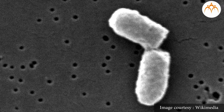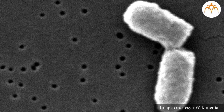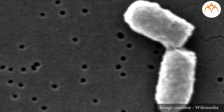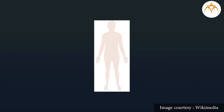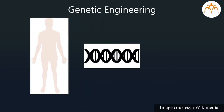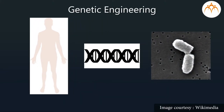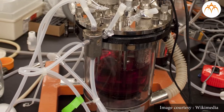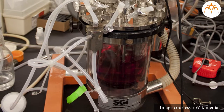With recombinant DNA technology or genetic engineering, it has become possible to manufacture human insulin using bacterial cells. The genes required for insulin production from human cells have been engineered and inserted into the common bacterium Escherichia coli. These genetically modified E. coli cells are then grown on a large scale under controlled conditions in containers called bioreactors. The insulin produced by the genetically modified bacteria is identical to human insulin and is extracted and purified to be supplied as medicine to diabetic patients.